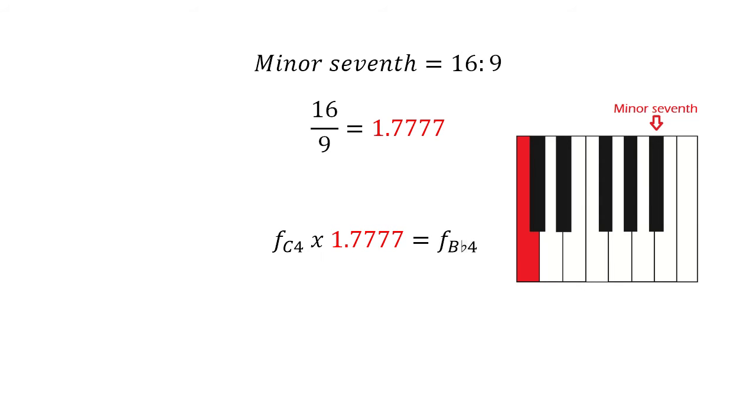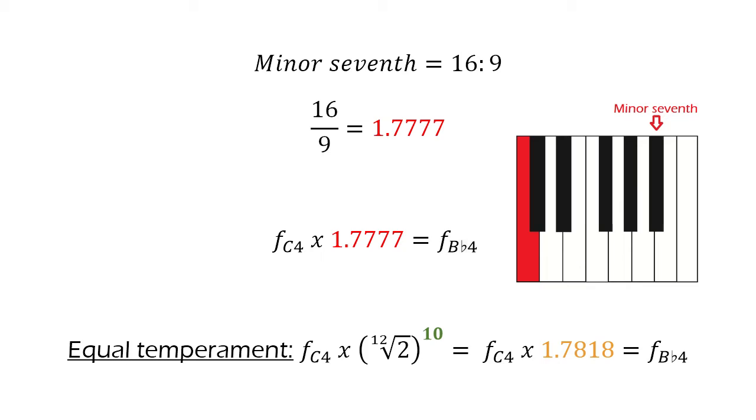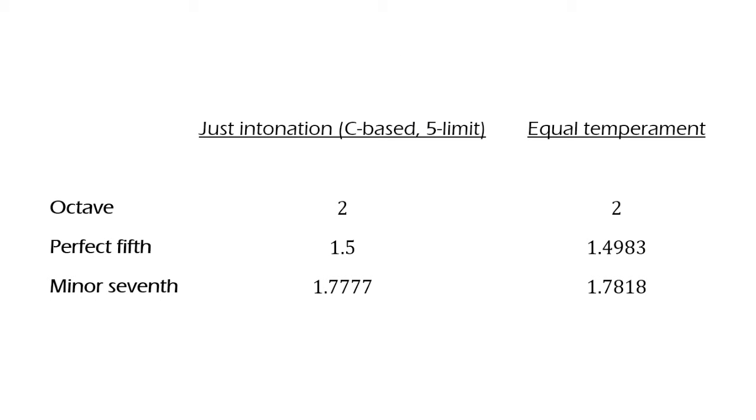The minor 7th is 16 to 9 equal to 1.7777, which means C4's minor 7th has 1.7777 times its frequency. For the minor 7th, you go up 10 semitones, and the 12th root of 2 to the 10th power equals 1.7818. Observe that the just intonation ratios are approximate to the equal temperament ratios.